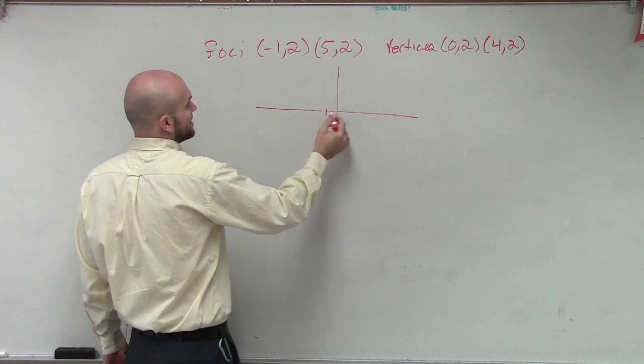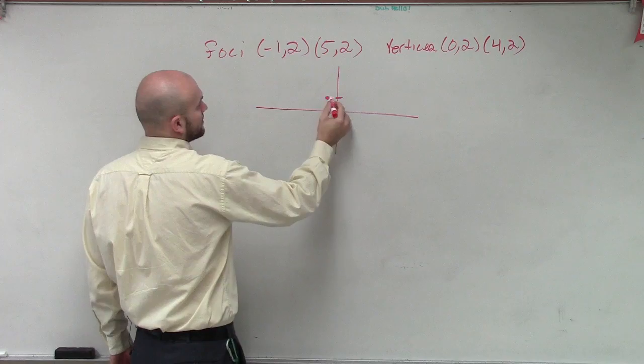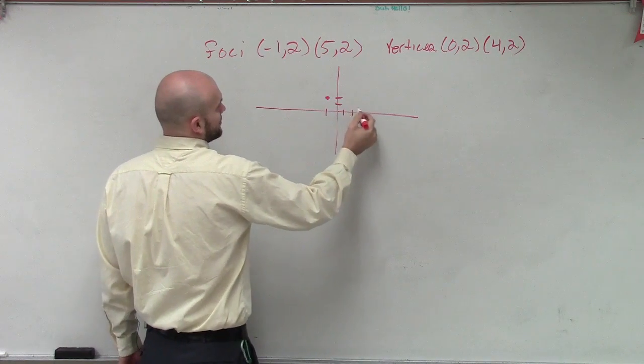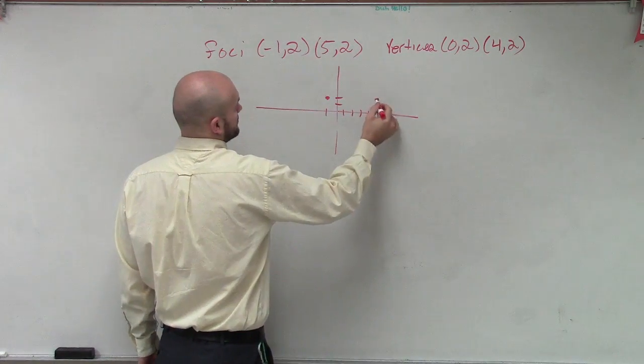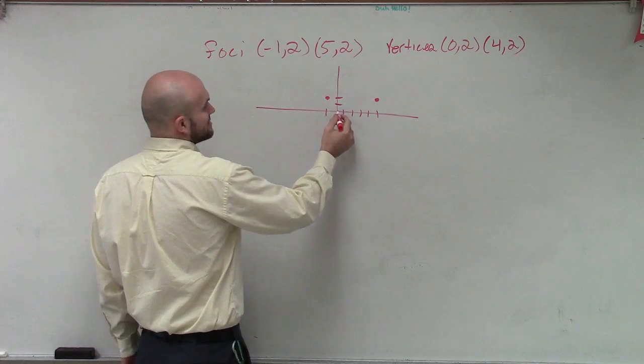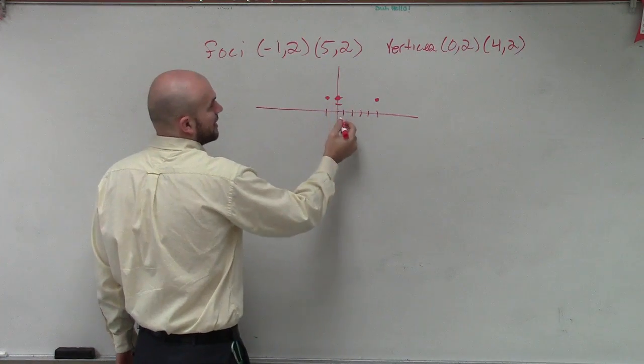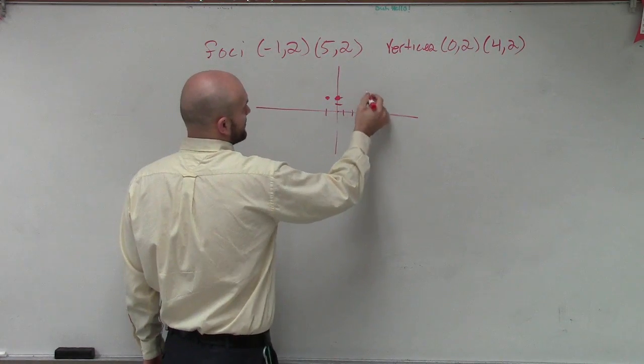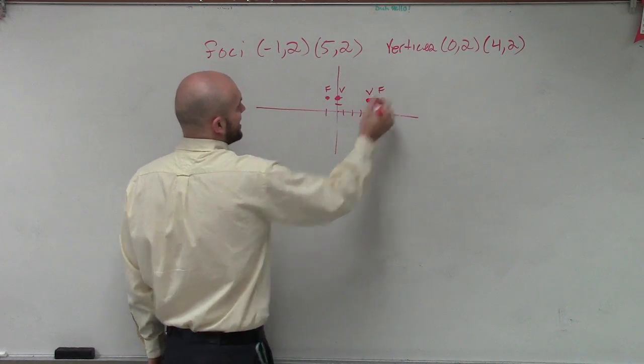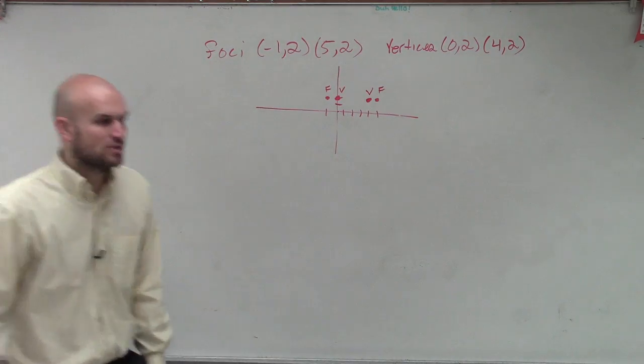So as I plot my points, negative 1, 2, 5, 2, and then my vertices are at 0, 2, and at 4, 2. So I have my vertices and my foci.